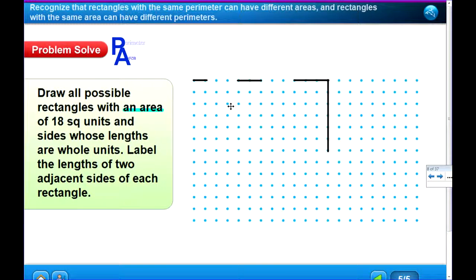Well, let's check problem solving. Now we're going to be looking at the area. Draw all possible rectangles with an area of 18 square units and sides whose lengths are whole units. Label the units of two adjacent sides of each rectangle. We need something that equals 18 square units. So if I have 1, 1 times what equals 18? 18. We found the area of this one to be 18. Is that correct? It's 18 square units. So that is one possible answer.